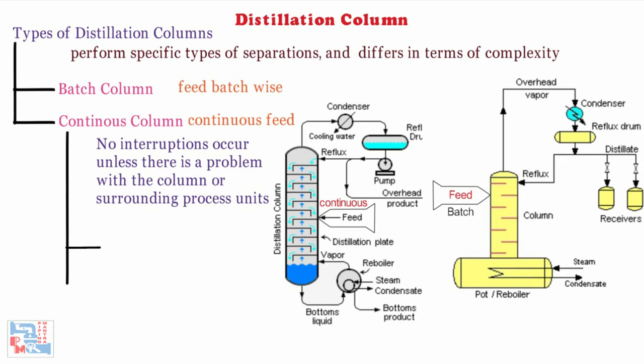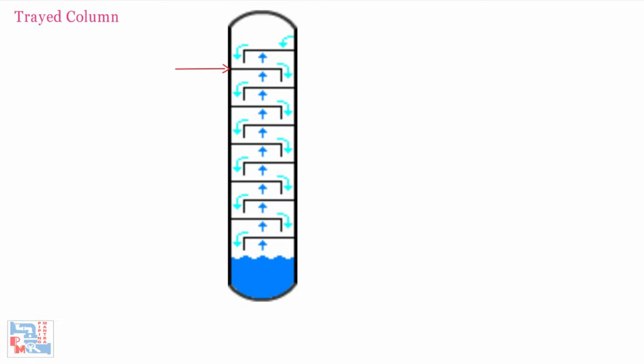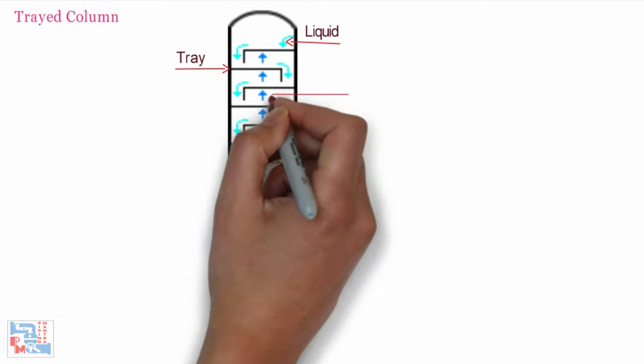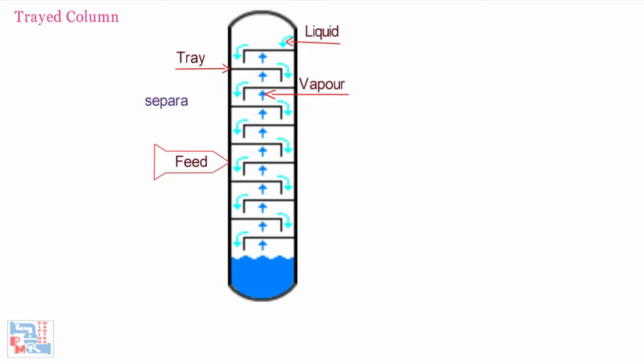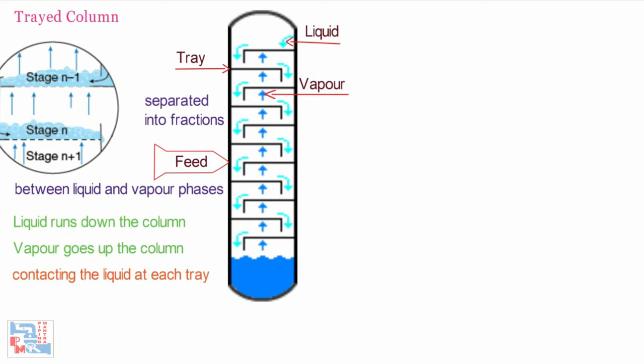Continuous columns can be further classified into two types, tray column and packed columns. In tray columns, the trays are arranged one above the other and liquid flows downwards. The feed material, which is to be separated into fractions, is introduced at one or more points along the column between liquid and vapor phases. The liquid runs down the column, cascading from tray to tray, while vapor goes up the column, contacting the liquid at each tray.